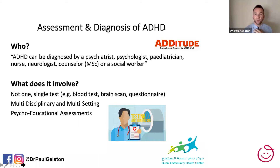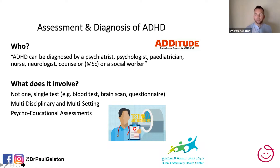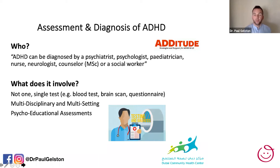The assessment must also be multisetting — I can't just use information gathered in the clinic. I really should be liaising with teachers and educators in schools about the child, going to see the child in school to observe their behaviour, and including parents and their perspective from the home environment too. This ensures I'm getting as much information as possible about the child in order to inform my opinion.